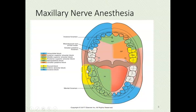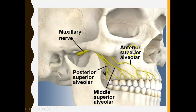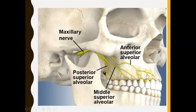Next, the anterior superior alveolar artery is another branch of the maxillary artery. It's called 'anterior' because it supplies the front teeth, and 'superior' because it supplies the upper teeth. If a dentist performs an anterior superior alveolar block by injecting in that area, it numbs all the blood supply to the front upper teeth.